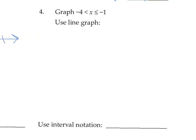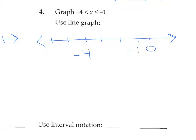Number 4: x is less than or equal to negative 1, and x is greater than negative 4. These first four were already solved for x, so we didn't have to worry about solving. The important numbers are negative 4 and negative 1. Negative 1 is closed because there's an equal bar there. x is less than negative 1 but greater than negative 4, so there's the shading. The left boundary of the interval notation is open at negative 4. The right boundary is negative 1, and it is closed, so it's brackets.